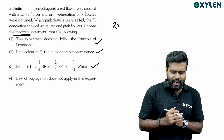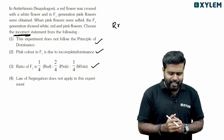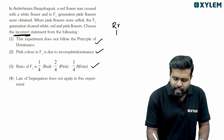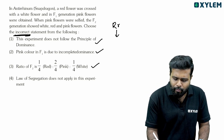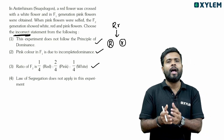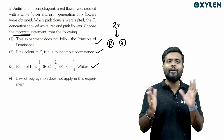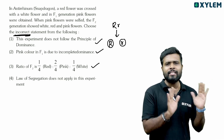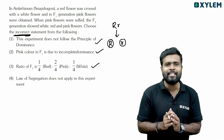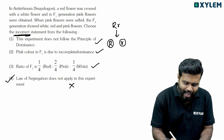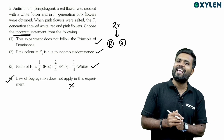The law of segregation does not apply in this experiment — that is the incorrect statement. The law of segregation still applies because alleles separate into gametes. So that is the wrong statement and it is the answer.